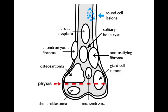Chondroid and myxoid fibromas are rare benign lesions and would be cortically based. A giant cell tumor has a classic location because it originates near the physis at the metaphyseal-epiphyseal interface and will grow to the articular surface. They tend to be eccentrically located. You shouldn't think of a giant cell tumor if you have a lesion in the diaphysis of a long bone — they just don't occur there. Conversely, a solitary bone cyst in the epiphysis would be very unusual.